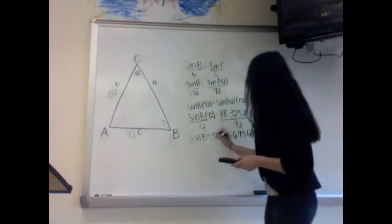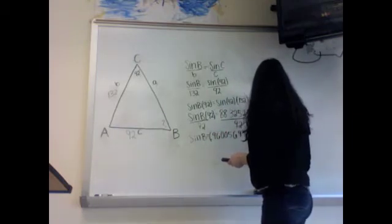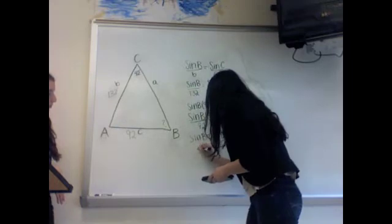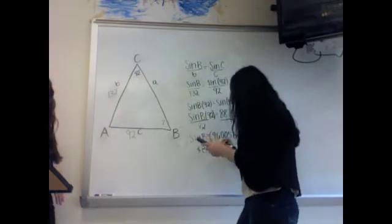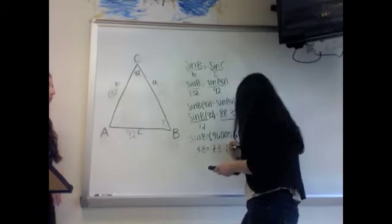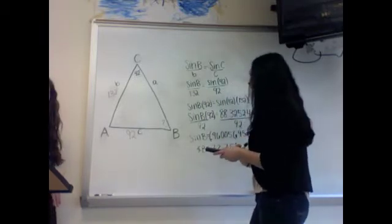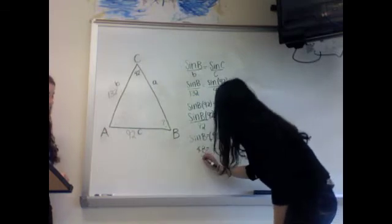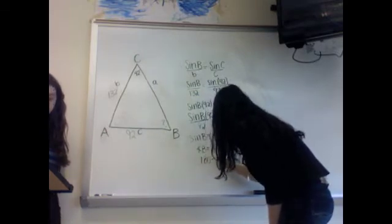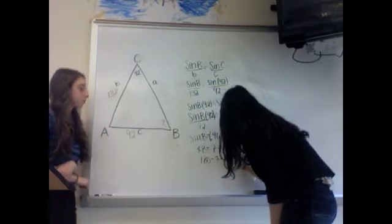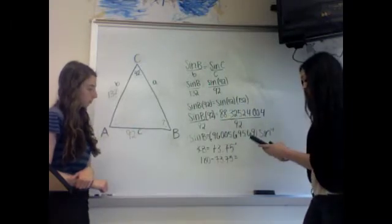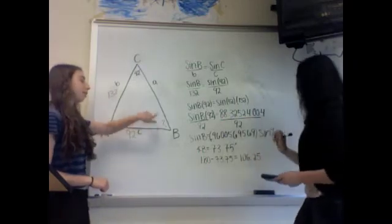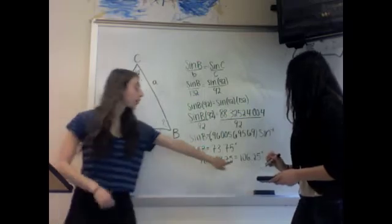Then we multiply by the inverse sine, and angle B equals 73.75. Now you have to subtract 73.75 from 180, so angle B could be either 73.75 or 106.25.